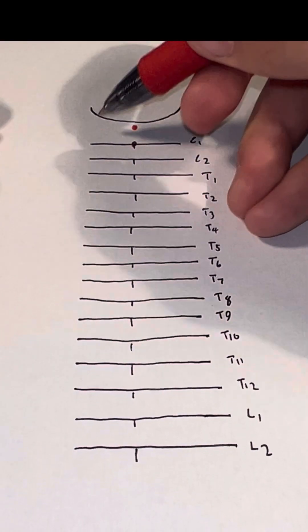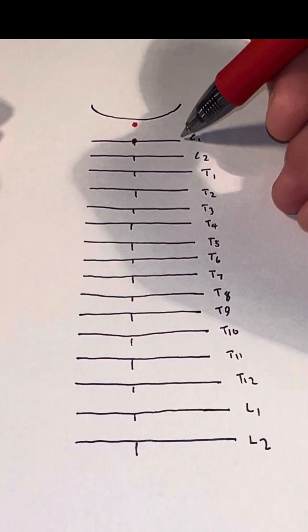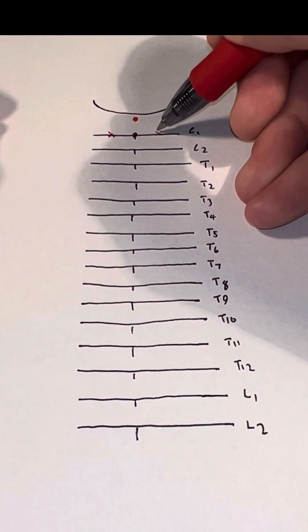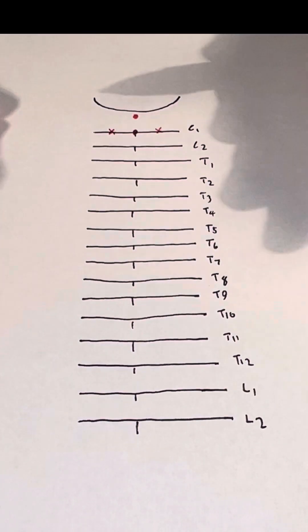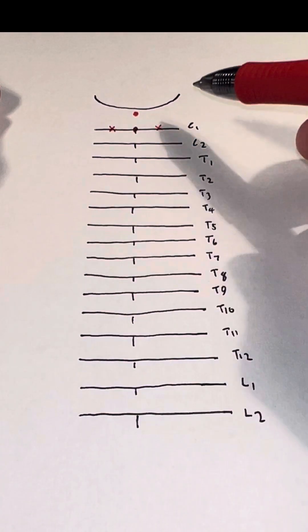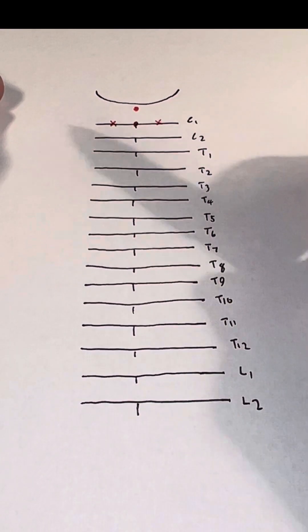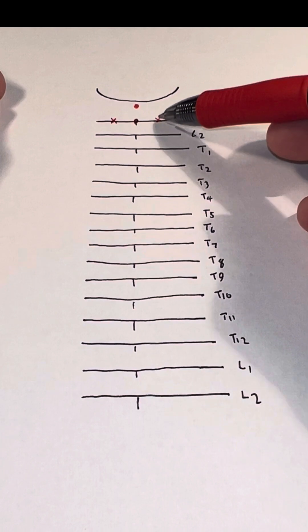About halfway between the outside of the line (the transverse process) and the spinous process in the middle, draw an X here and an X here. A circle represents a singular point or structure, whereas an X means it's the same thing but